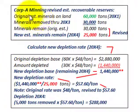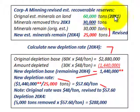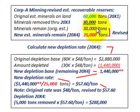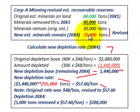Now let's look at what we have to do for this change. Corporation A revised its estimate of recoverable reserves. The original estimated materials on the land was 60,000 tons in 20x1. The minerals removed through 20x3 — from 20x1 to 20x3 — totaled 30,000 tons. So the remaining amount from the original estimate was 60,000 minus 30,000, leaving 30,000 tons. Then in 20x4 they came up with a new estimate of minerals remaining, revising it down from 30,000 tons to 25,000 tons.